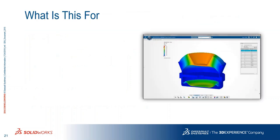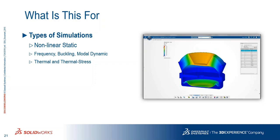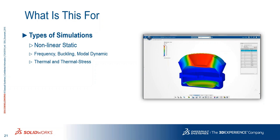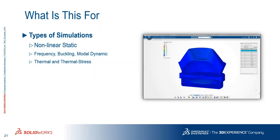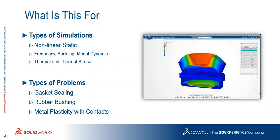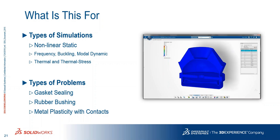What is SSE used for? The popular simulation types include nonlinear static — probably the key one — but also vibration and buckling problems: frequency, buckling, modal dynamic, and even thermal problems. The types of problems that fall into its wheelhouse include gasket sealing, rubber bushing, and metal plasticity with contacts.